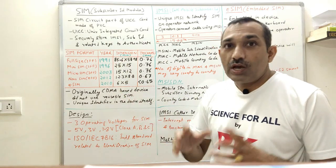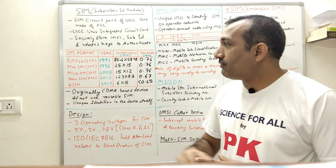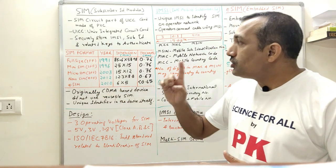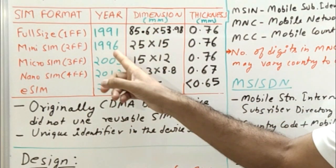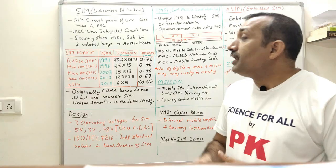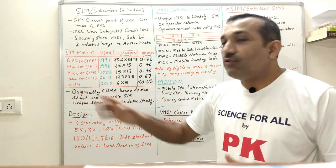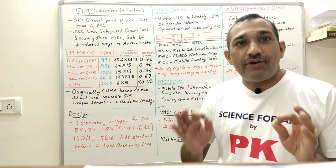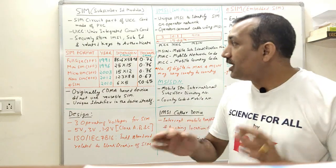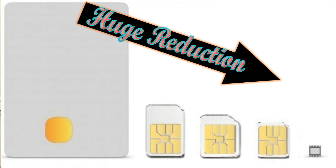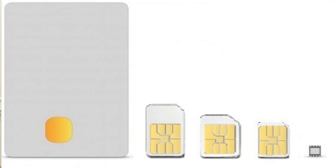Over time the size reduced a lot, though thickness did not change much. Mini SIM is called 2FF, micro SIM is 3FF, and nano SIM is 4FF. 1FF came in 1991, 2FF in 1996, 3FF in 2003, nano SIM in 2012. The latest eSIM was introduced in 2010 and is just 6 by 5 mm — 30 mm square — which is 154 times smaller than the original full-size SIM.